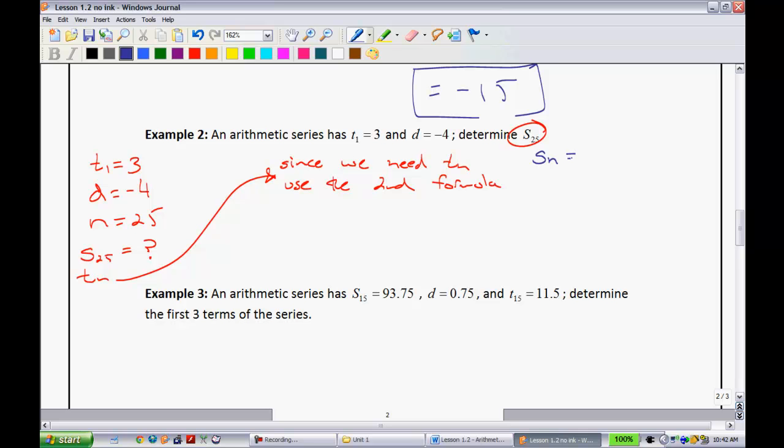So sn, the sum of the n terms, is equal to, and remember I'm taking the second formula, n, all multiplied by 2 times t1, plus our common difference times n minus 1, all divided by 2. So substitute in the information we know. We know that n is 25, 2 times the first term, the first term was 3. Common difference is negative 4. And then I'm just going to simplify this, n minus 1, of course it's just going to give us 24. All divided by 2.